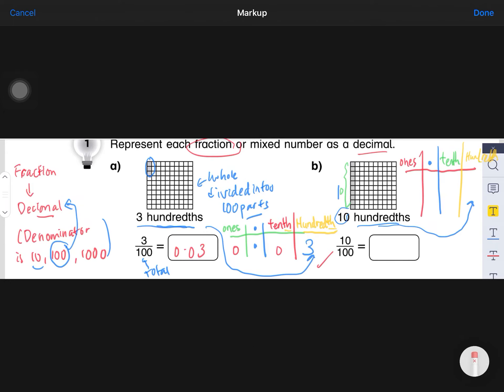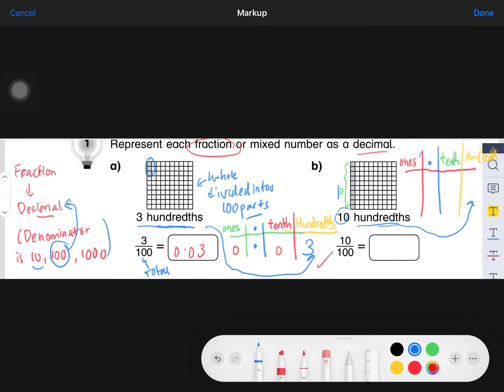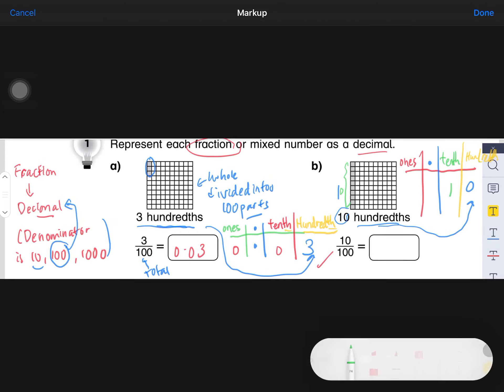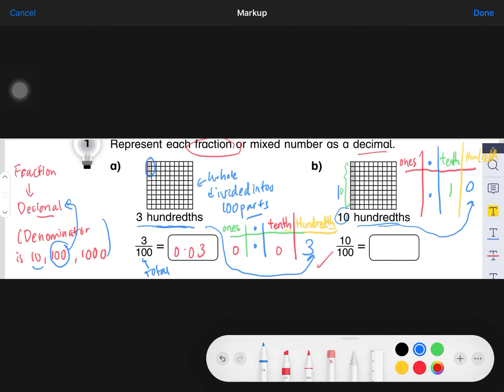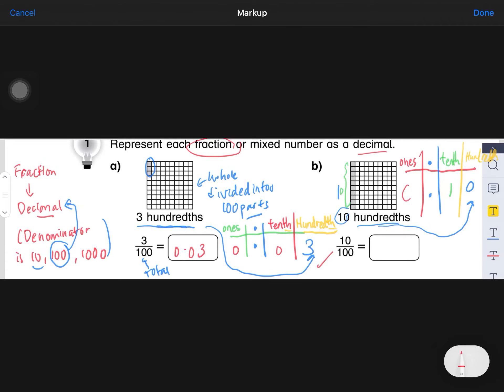So 0 and 1. Okay, then followed by your decimal point. And of course for ones there's 0, for tenths there's 1. So you put a 0 here. So the answer is 0.10.